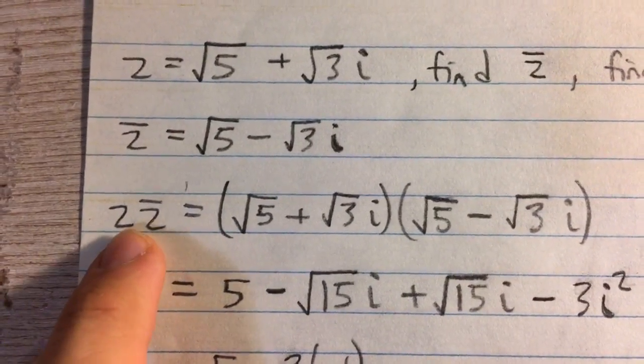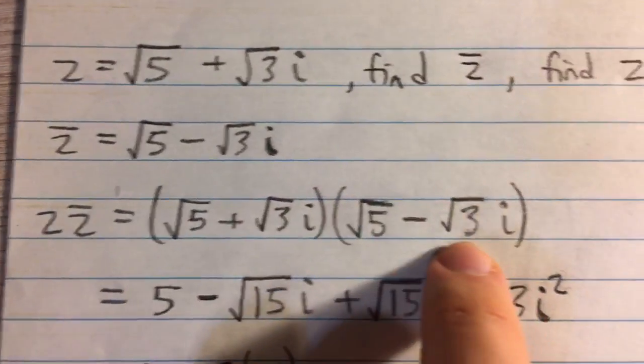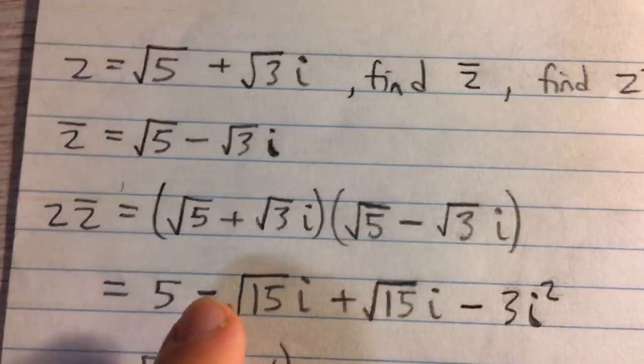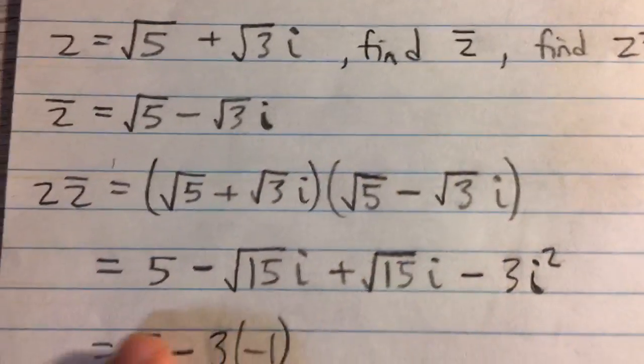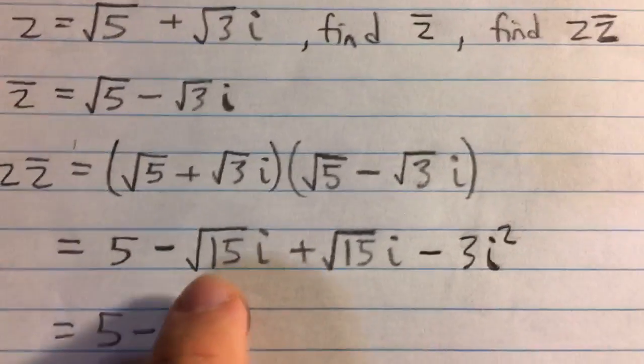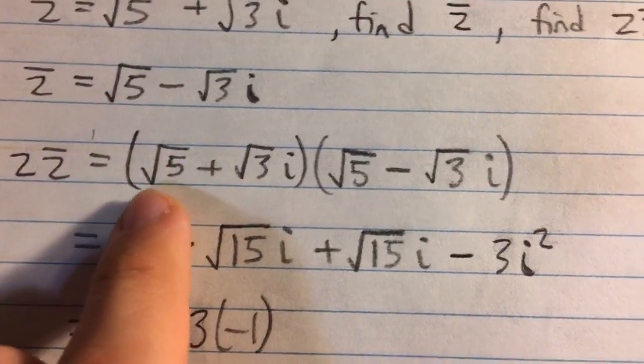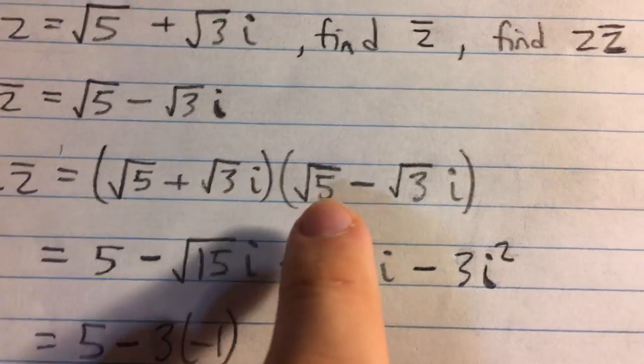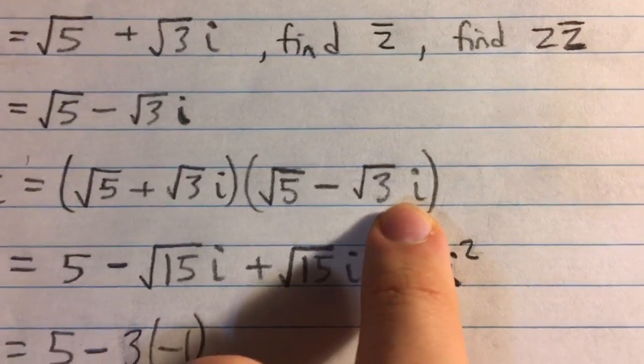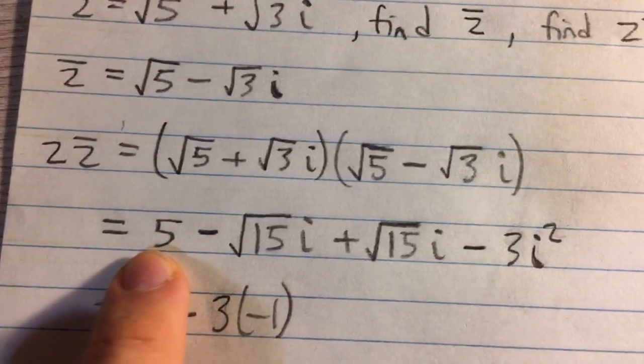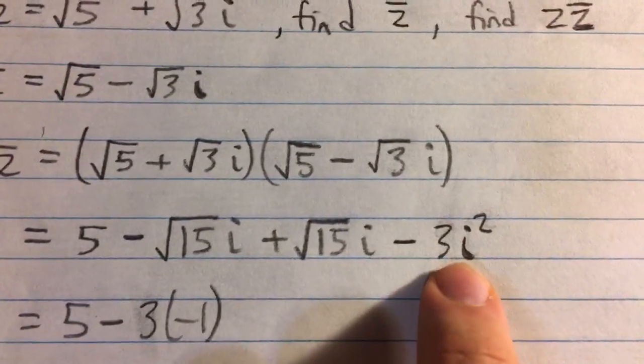Now to multiply them together, we see we have the number times its conjugate. And we can FOIL this out, and you can see that's what I have done here. But the middle terms actually cancel out, and this is a special expression of a plus b times a minus b, which is equal to a squared minus b squared.